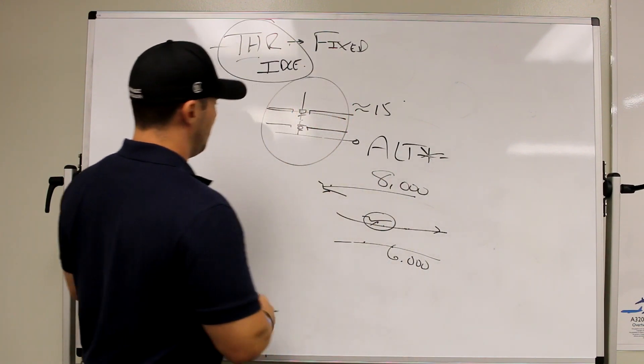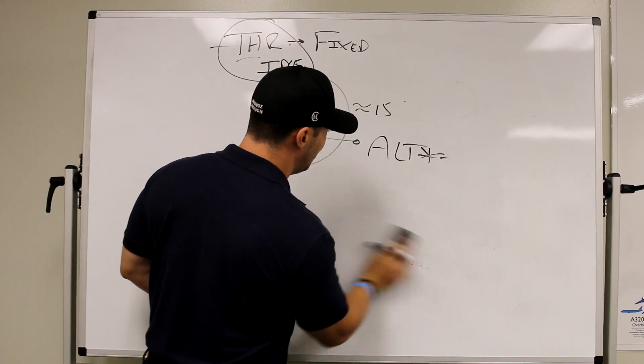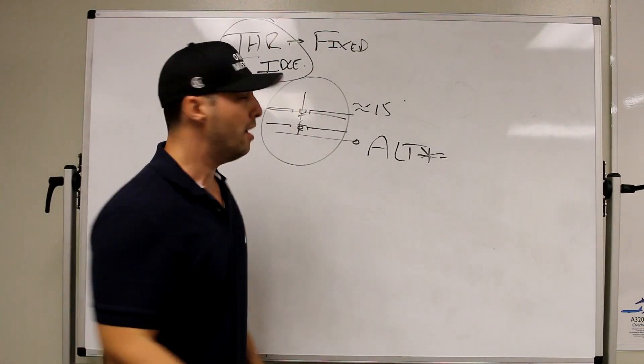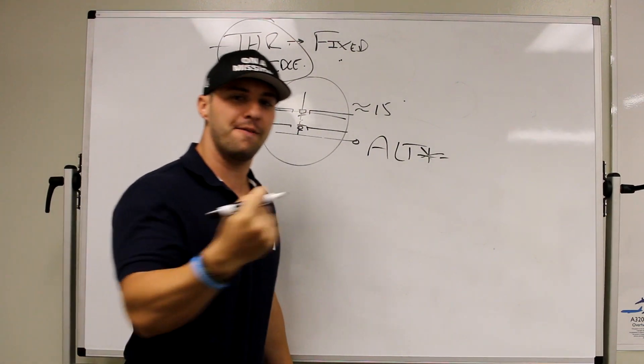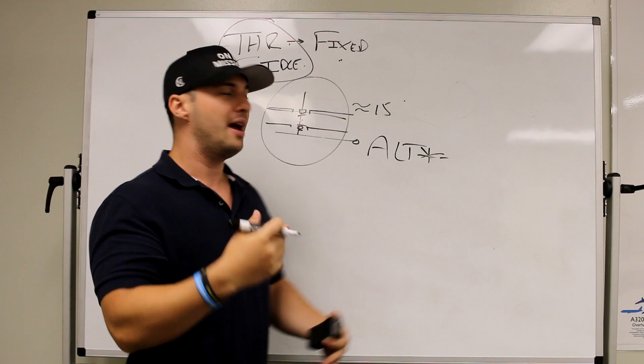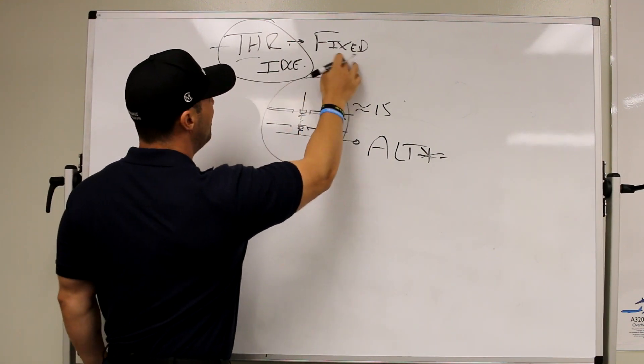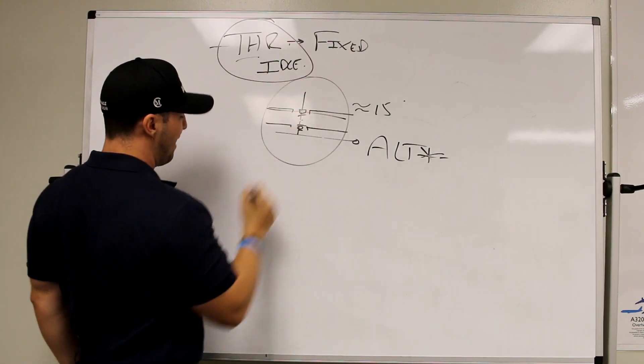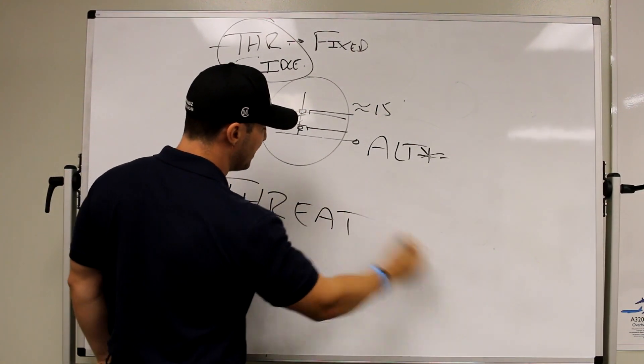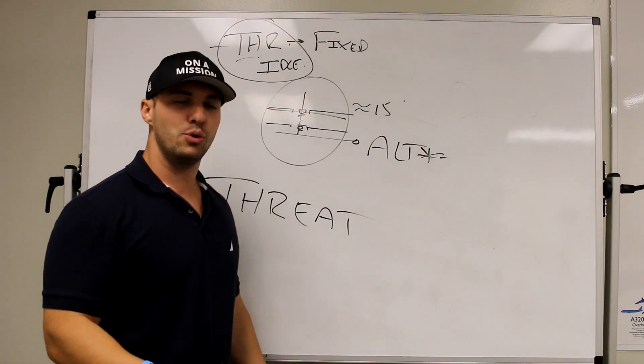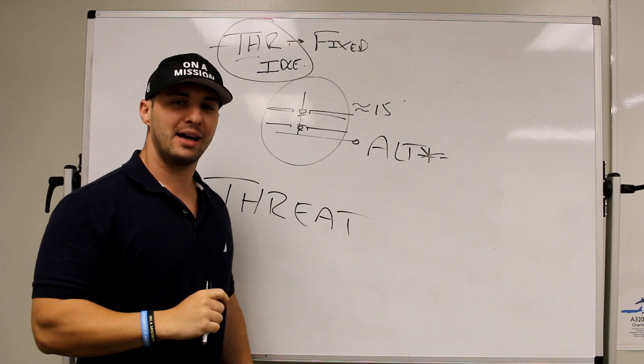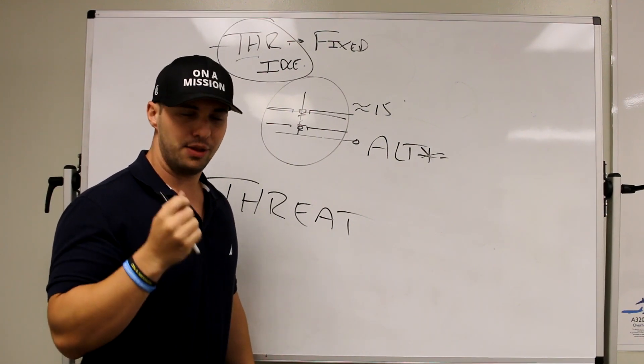So what's the point, Joe? Well, the point is you should realize that thrust idle and thrust climb are fixed thrust modes. And because they are fixed thrust modes, the thrust is fixed, the pitch must vary, and because your thrust is fixed, you should also think of that THR as a THREAT, a threat. Because the auto-thrust system is not backing you up to maintain speed. No, your pitch must back you up to maintain the speed.